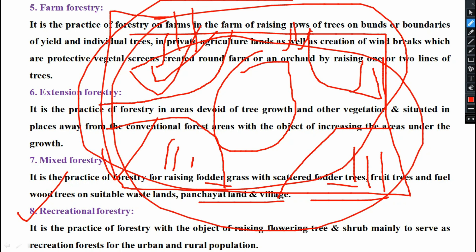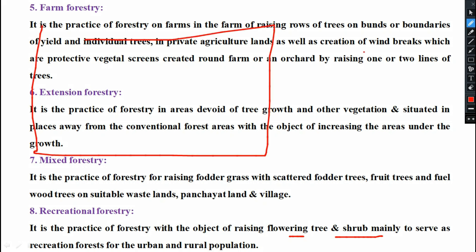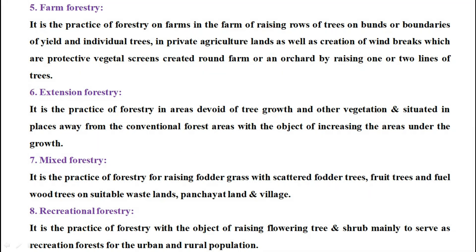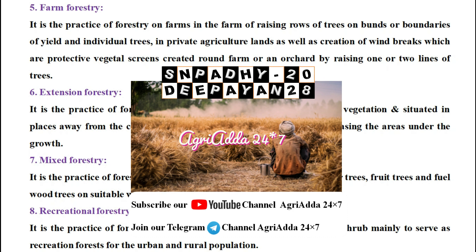Next is recreational forestry. It is the practice of forestry with the objective of raising flowering trees and shrubs, mainly to serve as a recreation forest for the urban and rural population. For example, some park or roadside planting. This is recreational forestry. So we have discussed eight different types of forestry.